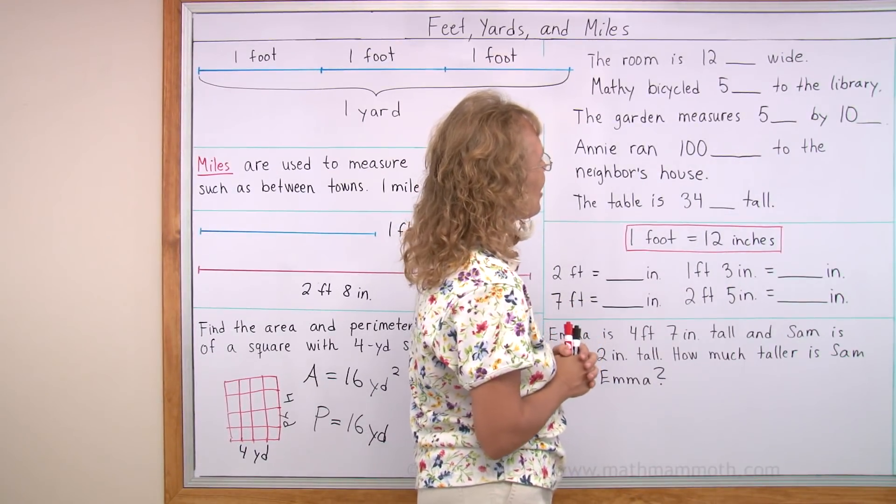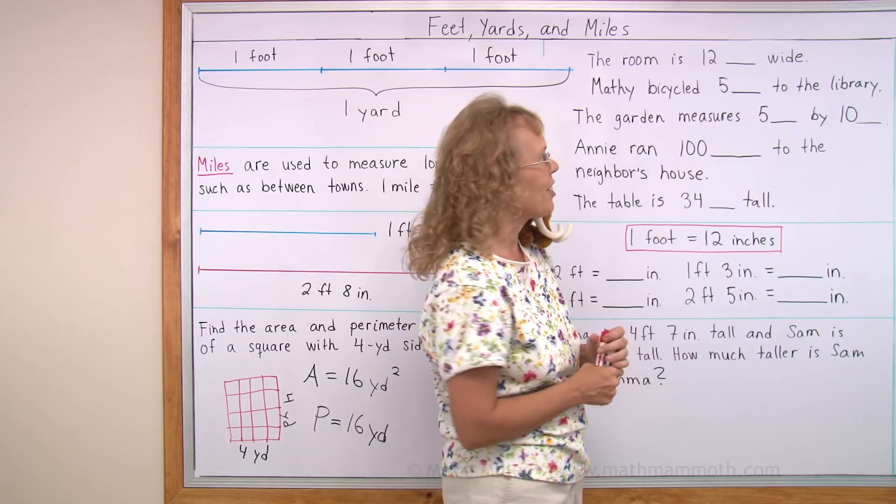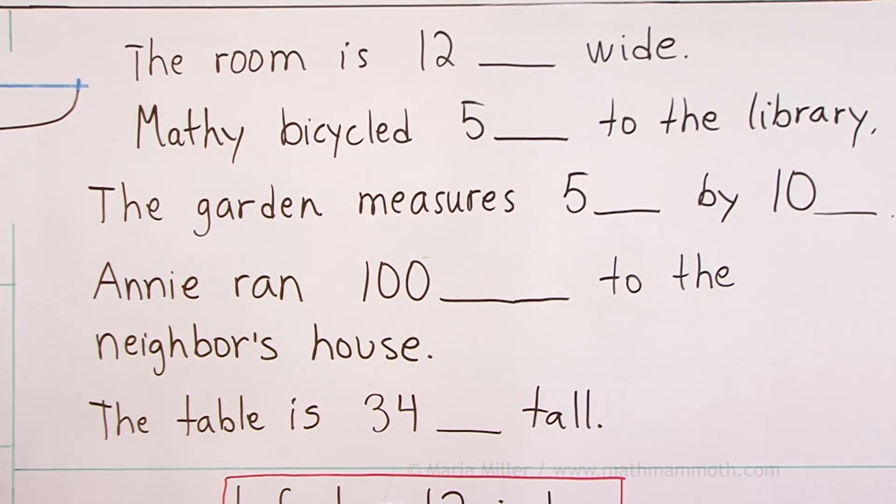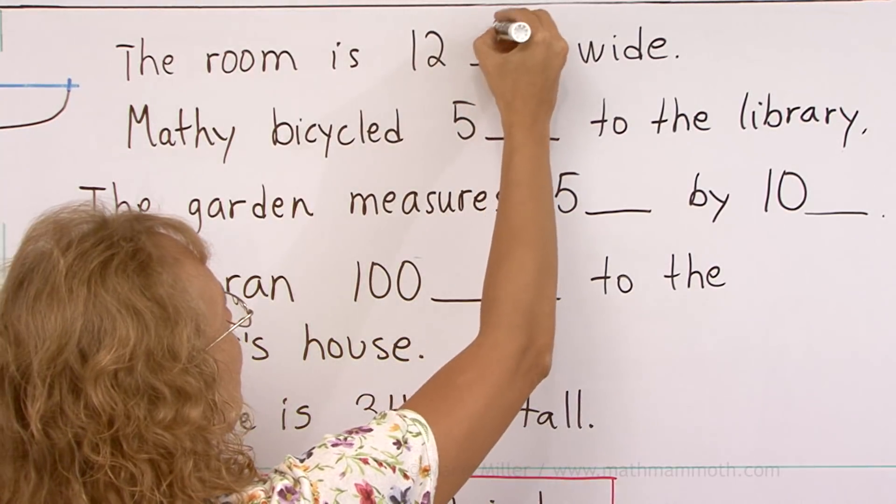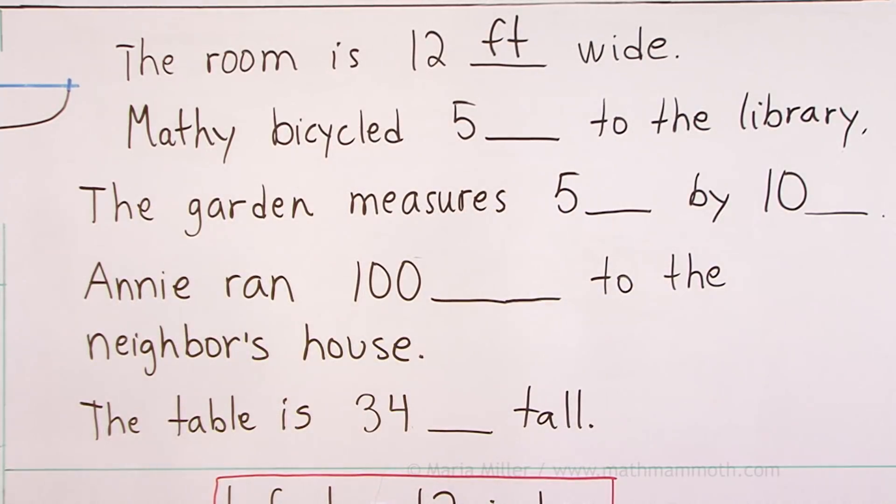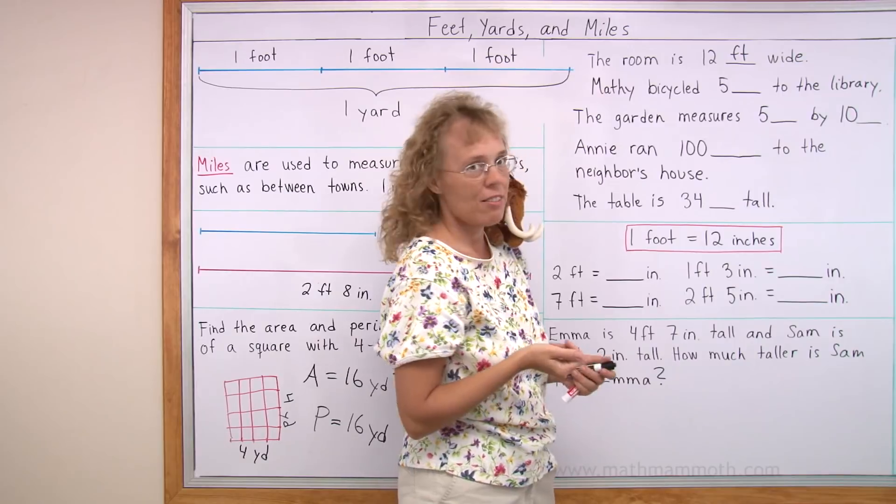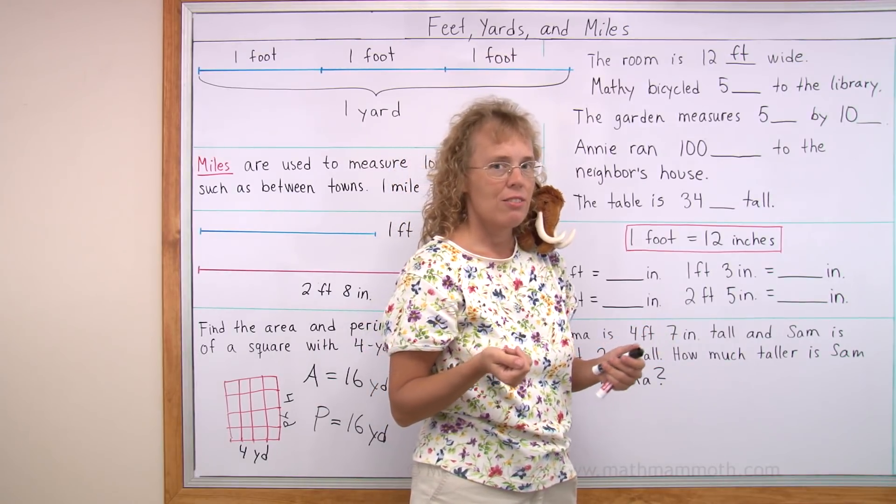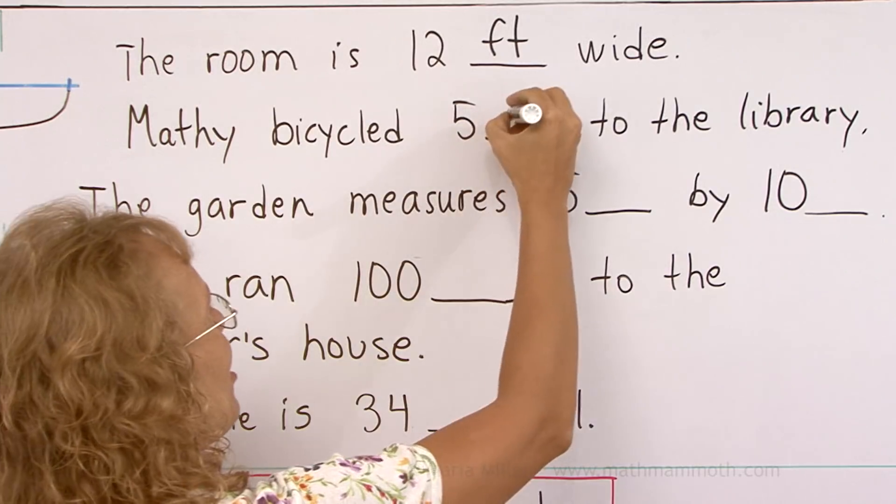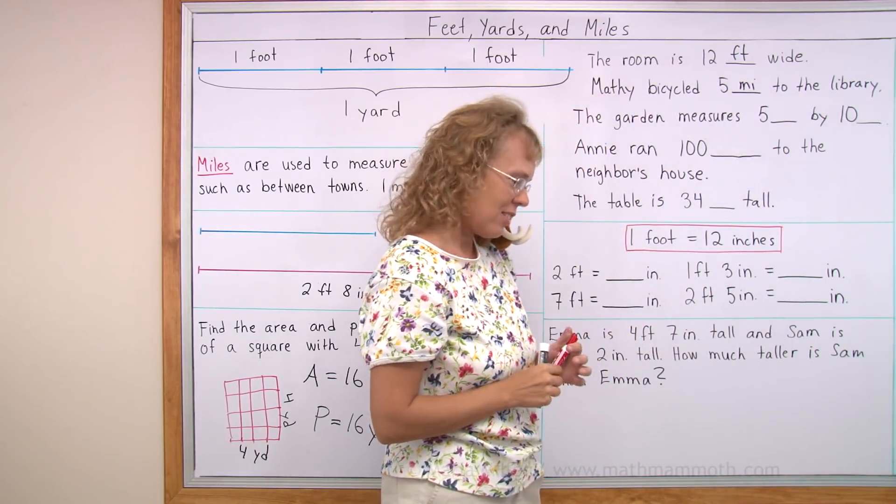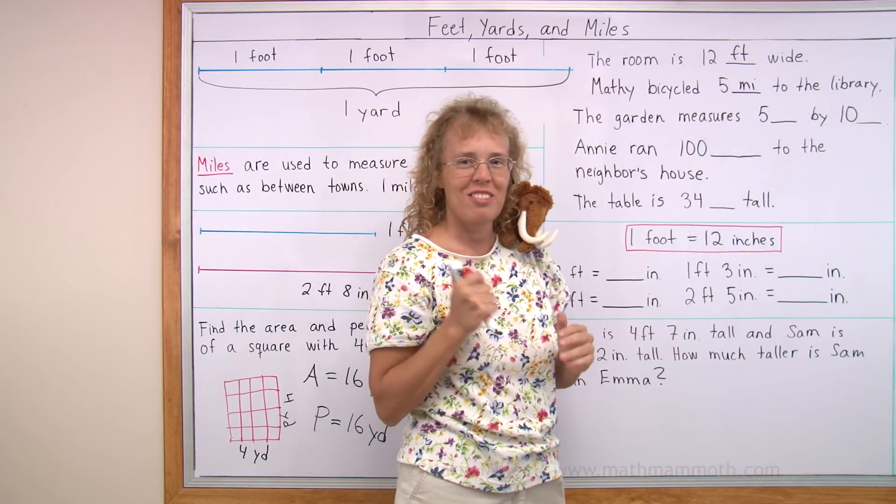Over here, our task is to fill in the blanks so that it makes sense. The room is 12 what wide? A unit? Miles? Centimeters? Feet? What? 12 inches won't work. That would be pretty little room unless it was a dollhouse. If it is a normal room, I think we need to use feet. Matthew bicycled five something to the library. Five inches? Five feet? Five yards? Five miles? Miles, of course. Matthew, what kind of books did you get? Oh, I should have guessed. Puzzle books.